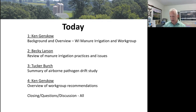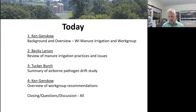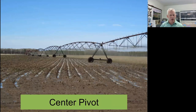Let me begin by clarifying what we mean by manure irrigation. Manure irrigation refers to the practice of applying livestock manure or processed wastewater through irrigation equipment. It generally involves pumping liquid manure from the storage area through pipes or hoses to equipment that's conventionally used for irrigation.